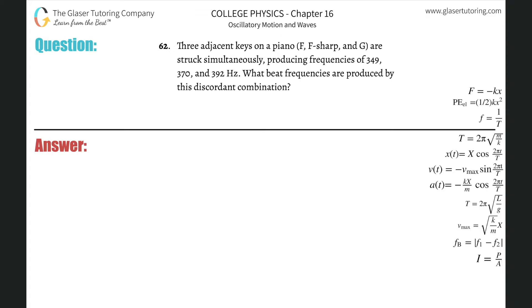Number 62. Three adjacent keys on a piano, F, F sharp, and G, are struck simultaneously producing frequencies of 349, 370, 392 hertz. What beat frequencies are produced by this discordant combination?